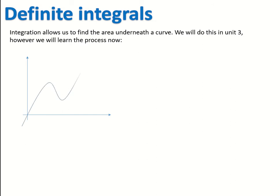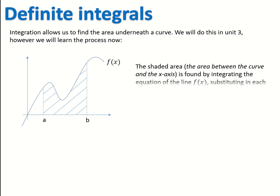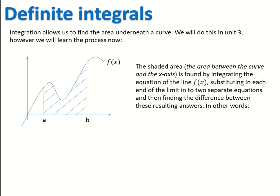Generally what we're going to have is these functions f of x. If we were to draw it, it would look something like this. What we're looking for when we're finding the definite integral is basically the area covered underneath that curve between the curve and the x-axis, closed off by two values, a and b. The shaded area between the curve and the x-axis is found by integrating the equation of the line — just doing what we've been doing so far.